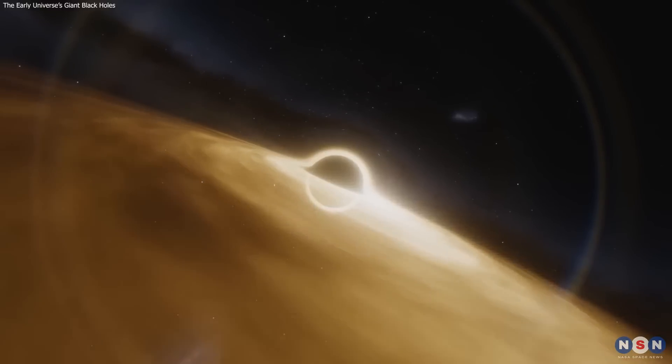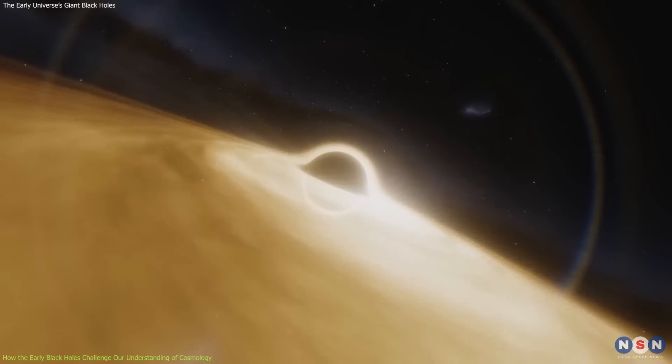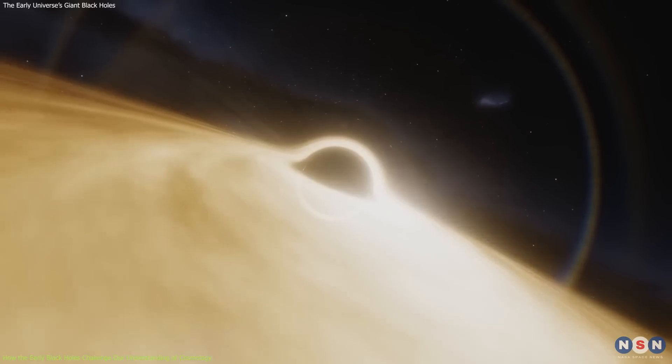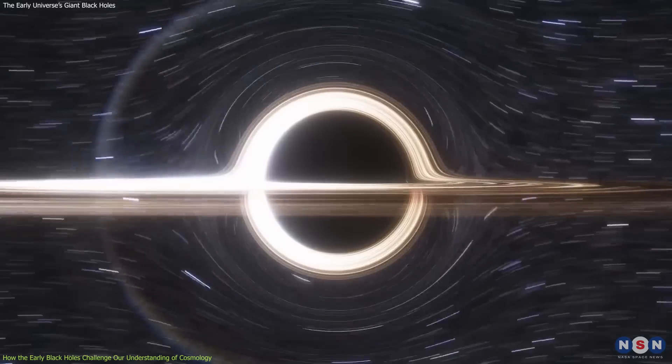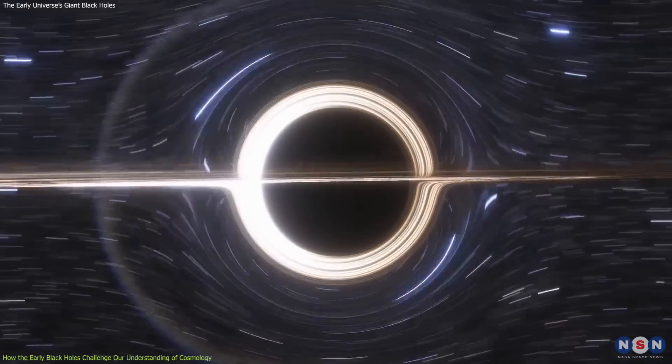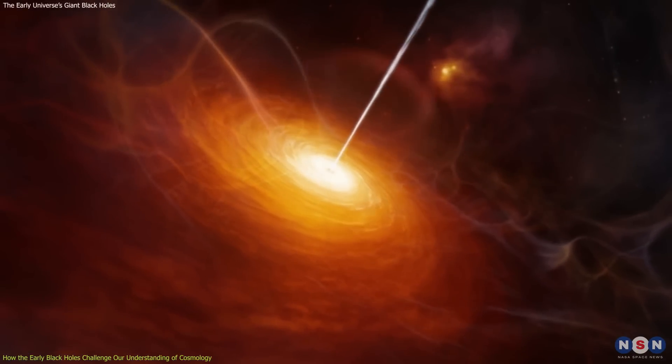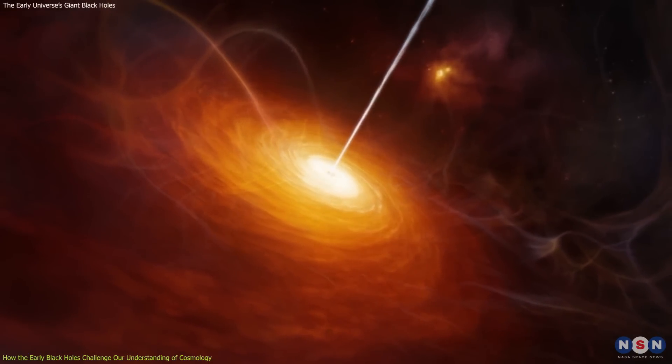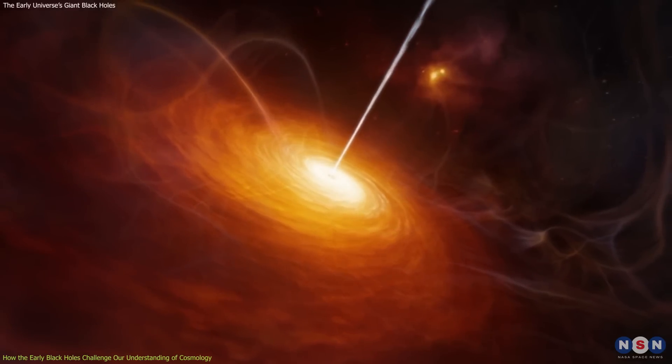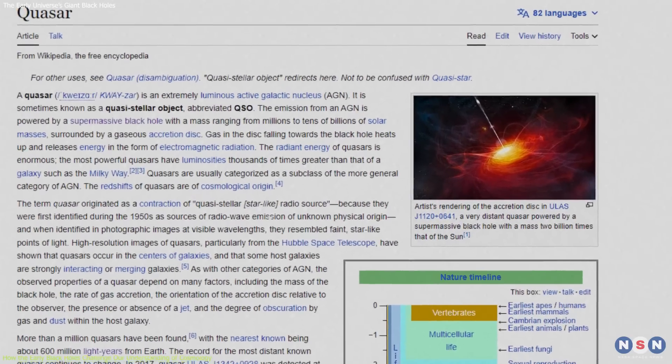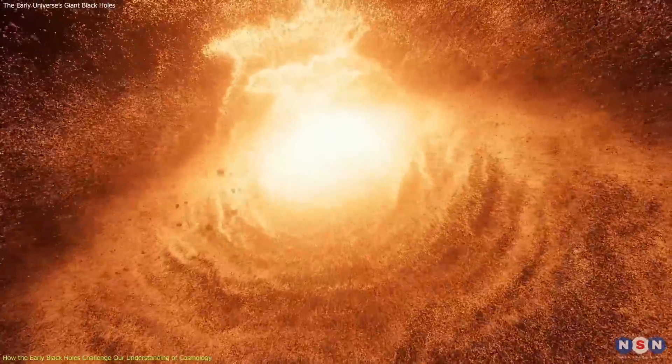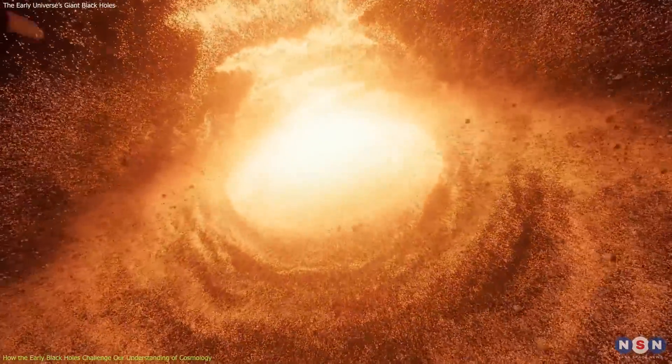These questions have puzzled astronomers since they first discovered supermassive black holes in the early universe. These are black holes that have masses between billions and tens of billions of times that of our Sun. They are found in quasars, which are extremely bright and powerful sources of radiation that outshine entire galaxies. Quasars were first detected in the 1960s, but it took decades to realize that they were powered by supermassive black holes.